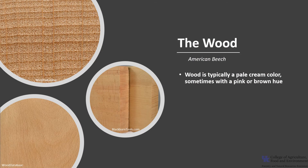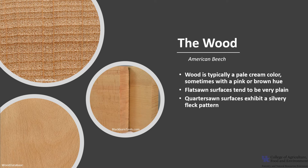American beech wood is typically a pale cream color, sometimes with a pink or brown hue. Veneers tend to be slightly darker in color, as slicing the veneer usually requires the wood to be prepared with steam, which gives the wood a more golden tone. Flat-sawn surfaces tend to be very plain, while quarter-sawn surfaces exhibit a silvery fleck pattern.